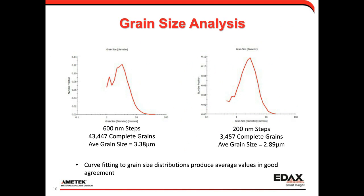Once we have grain size information, we can create a grain size distribution. Comparing both step sizes: the 600-nanometer step size covers a larger area with over 40,000 grains and an average grain size just over 3 microns. The 200-nanometer step size covers a smaller area with about 3,500 grains, but resolves smaller features — the average grain size drops to about 2.9 microns. With the 200-nanometer steps, we see more clearly the full distribution, while with 600-nanometer steps the lower end of the distribution curve isn't as well defined.